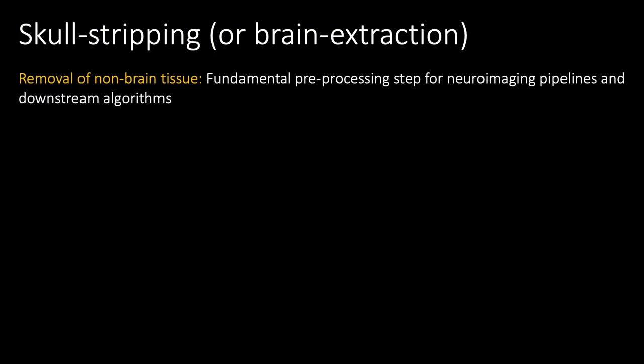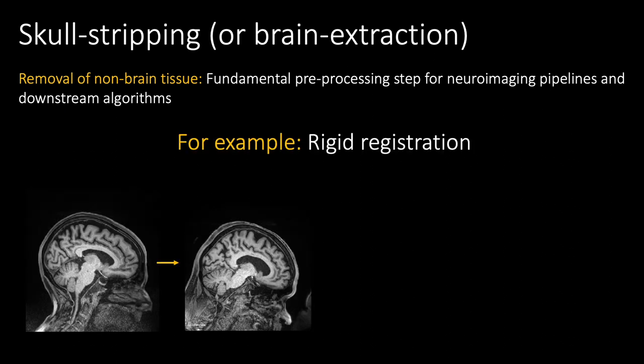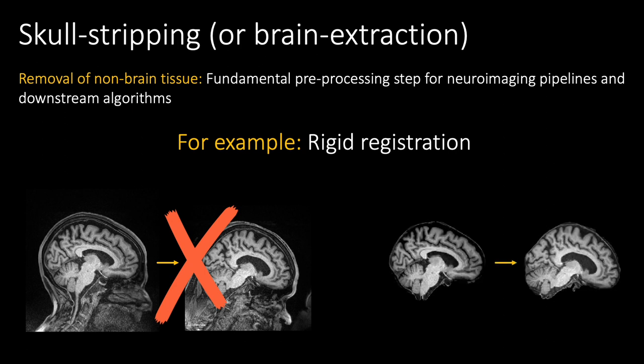Skull-stripping is common in neuroimage analysis, and it's a fundamental pre-processing step in many pipelines like FreeSurfer, FSL, and AFNI, since many downstream algorithms perform much better by being able to focus entirely on pertinent brain matter voxels. One such class of algorithms is image registration, which might perform poorly in the presence of non-brain tissue like the neck, which deforms non-rigidly and can interfere with an accurate alignment.